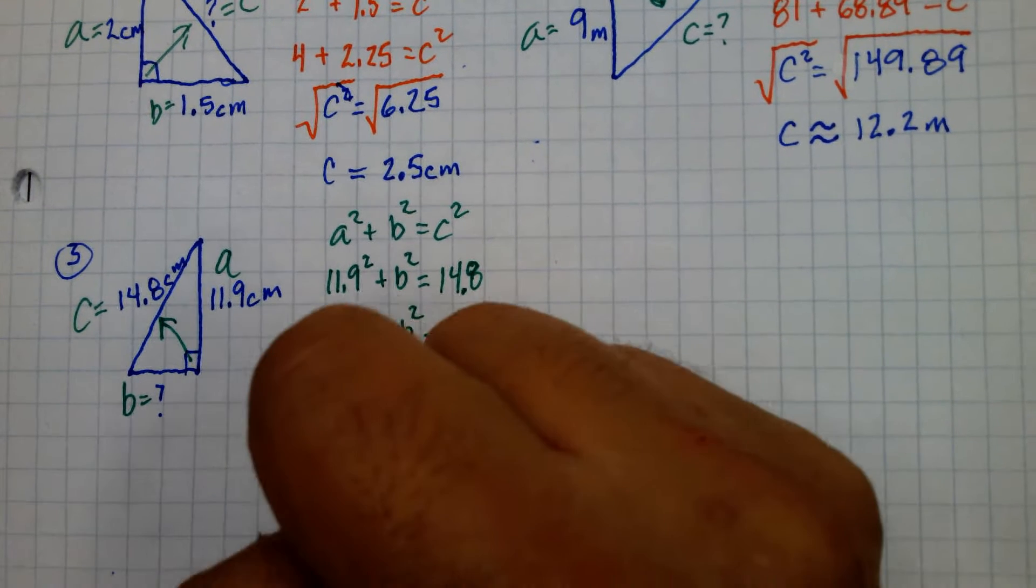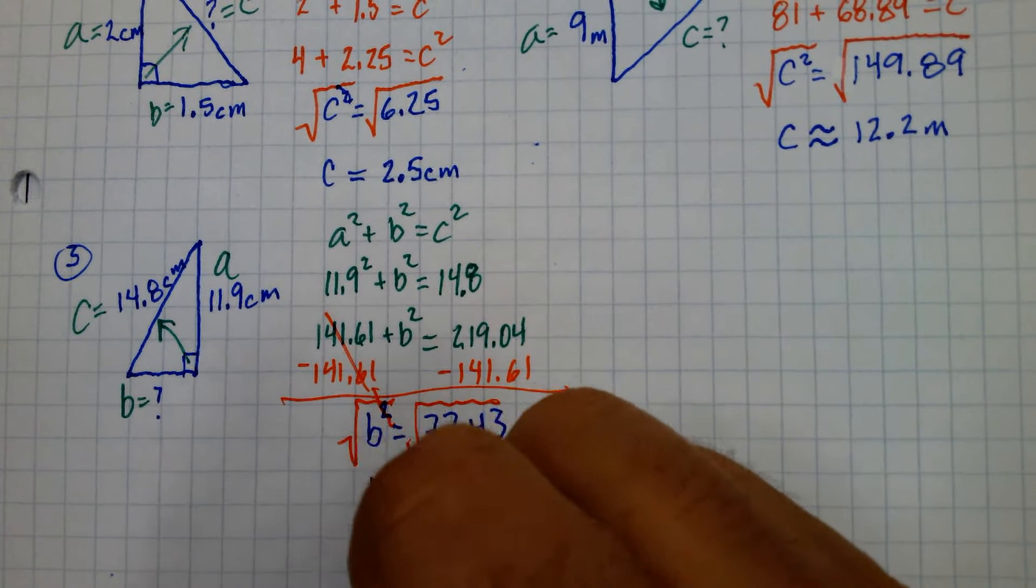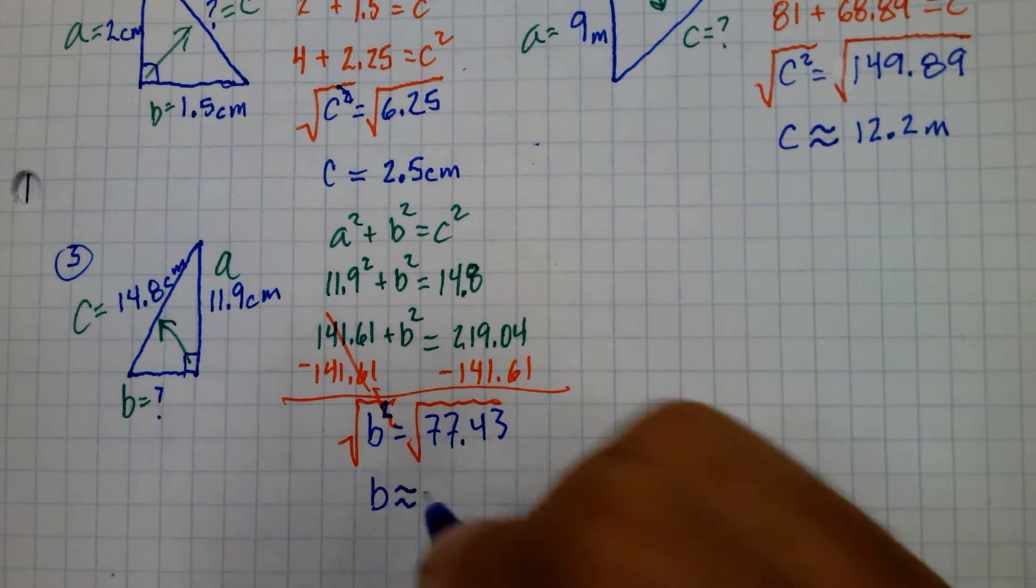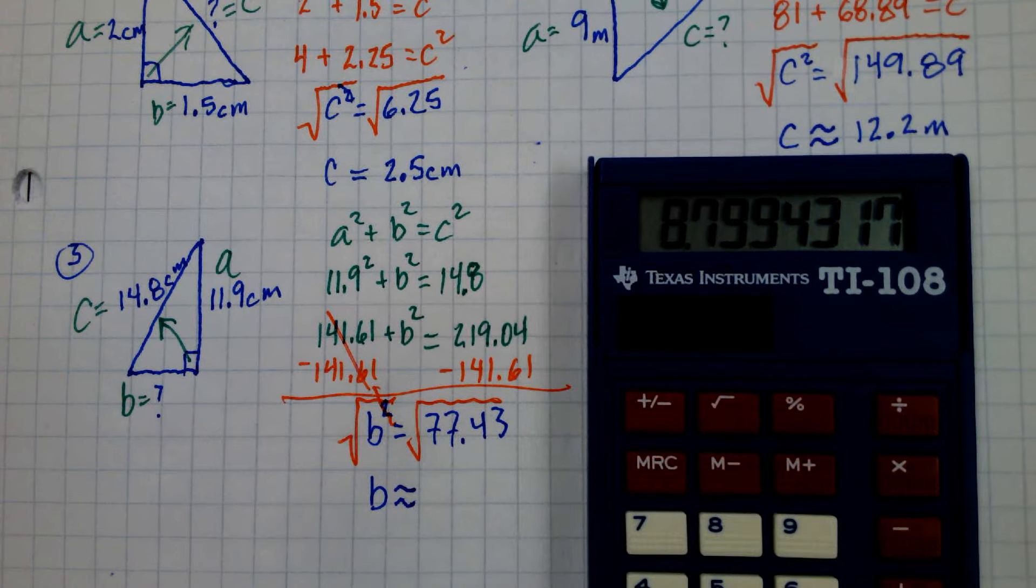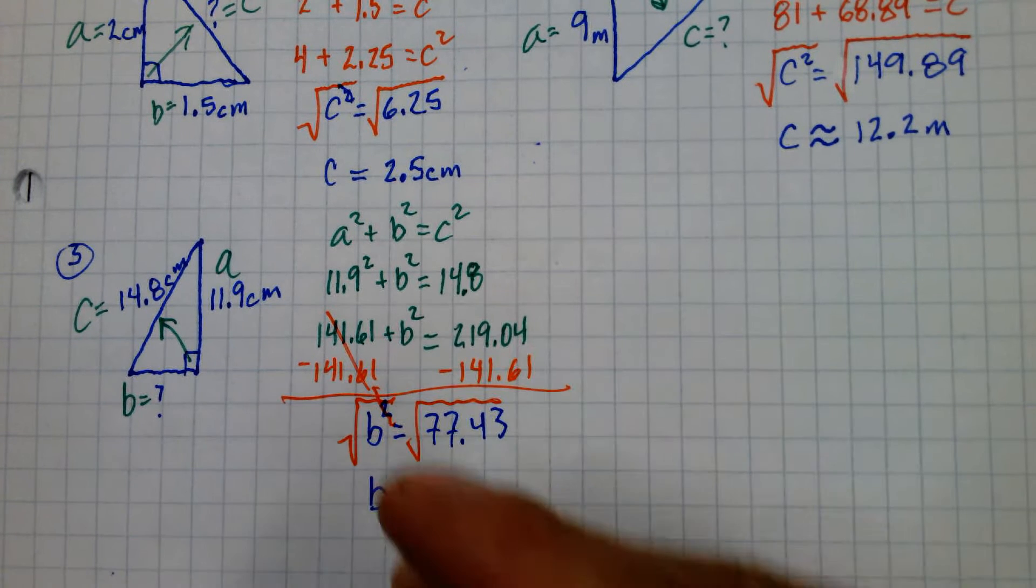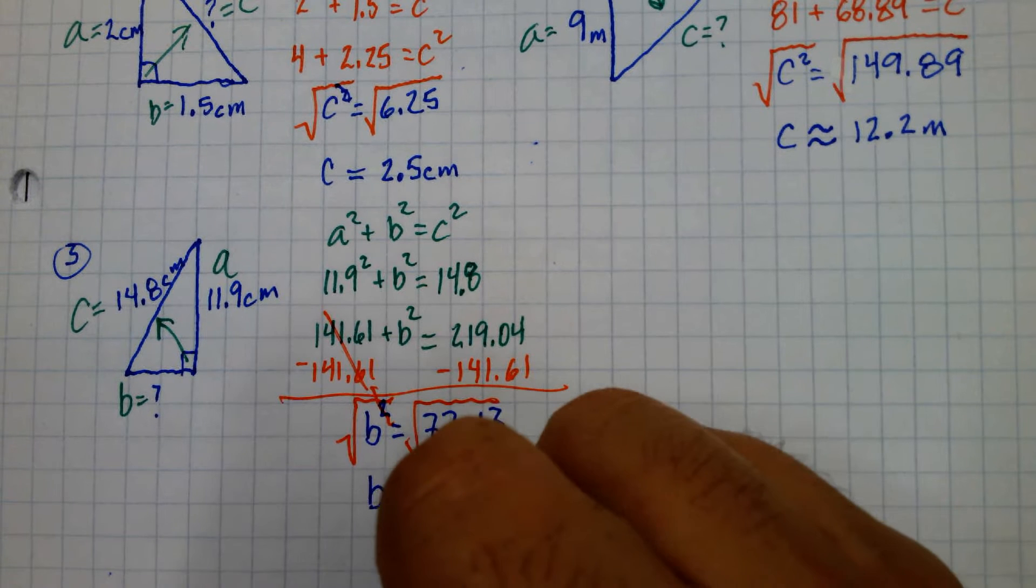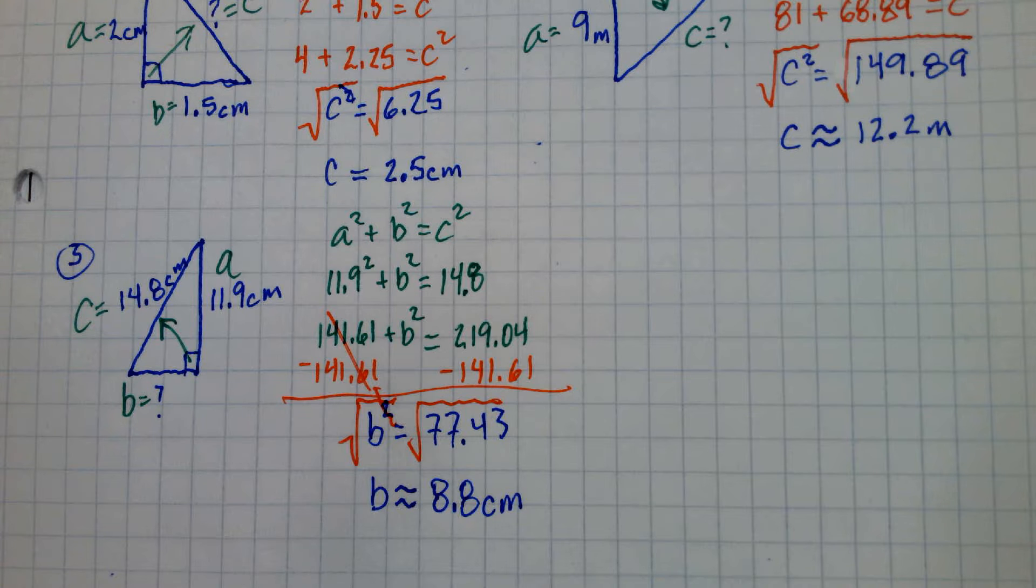And now let's square root this and we get B is pretty sure this one's going to be irrational. What would that round to? To the nearest tenth? 8.8. So this is going to be about 8.8 centimeters. All right. So that's what we're doing today on IXL is finding missing sides of right triangles using the Pythagorean theorem.